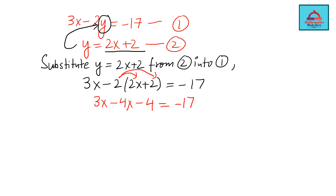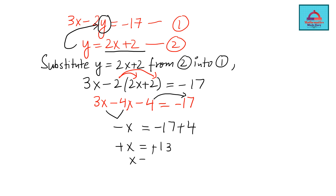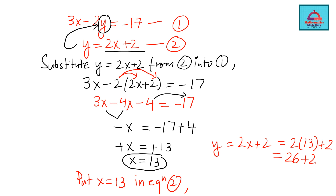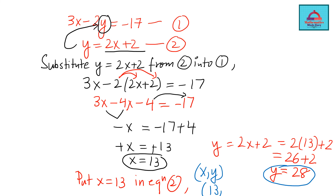Combining like terms: 3x and −4x give −x, and −4 moves to the other side becoming positive, giving −x = −13. Replacing the negative, x = 13. In step three, substitute x = 13 into equation 2: y = 2(13) + 2 = 26 + 2 = 28. You now have both variables. The final solution as an ordered pair is (x, y) = (13, 28).